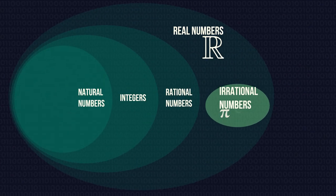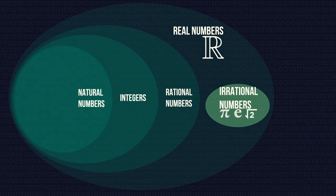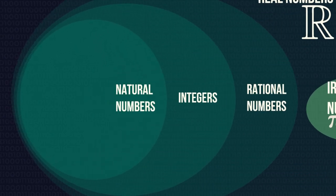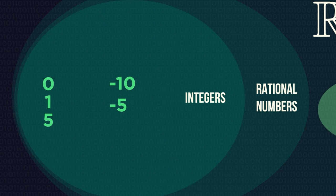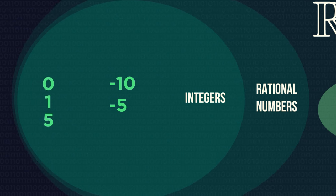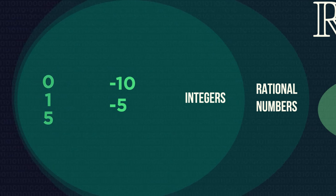Now, back to rational numbers. These can be separated down further. Natural numbers and integers. Integers are any positive whole numbers, negative whole numbers, zero.